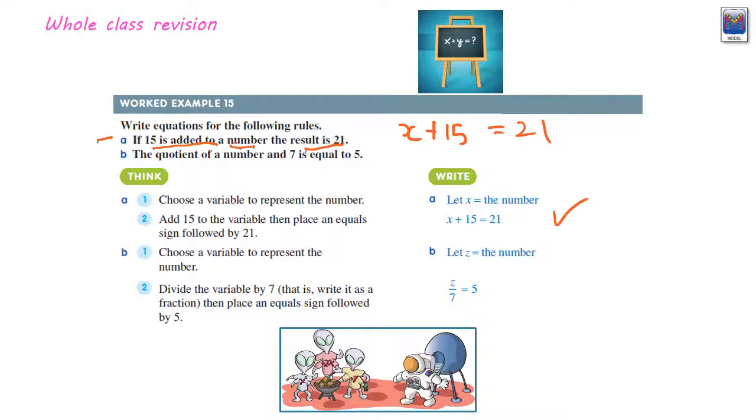Next one, the quotient of a number and 7 is equal to 5. So, the quotient of a number, so that's x. The quotient of that number and 7, x divided by 7, is equal to 5.